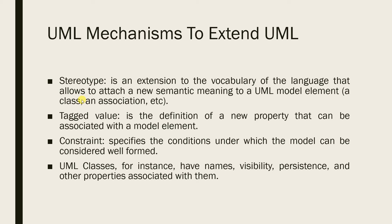The tagged value is the definition of a new property that can be associated with a model element. UML classes, for instance, have names, visibility, persistence, and other properties associated with them that are related to this tagged value concept. The constraint specifies the conditions under which the model can be considered well-formed.